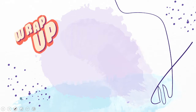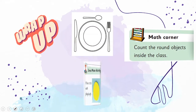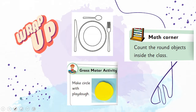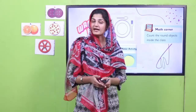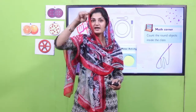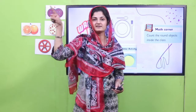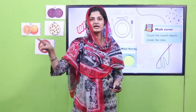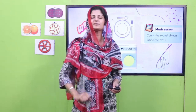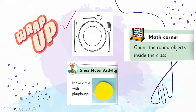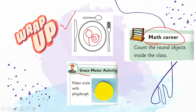After so many activities, it's time for wrap-up. Let's see which activities we have done so far. First, we did the action poem — 'Do as I'm doing, follow follow me, I can do it high, I can do it low, I can do it fast, I can do it slow' — making circle shapes in the air. After that, we sorted circle objects and pasted them into our plate — the doughnut, the lolly. Then we went to the math corner and counted the circle objects. Finally, we went to the gross motor activity corner and made circles with play-doh and cut them out.